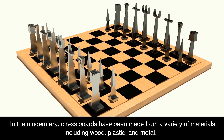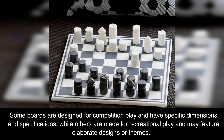In the modern era, chessboards have been made from a variety of materials, including wood, plastic, and metal. Some boards are designed for competition play and have specific dimensions and specifications, while others are made for recreational play and may feature elaborate designs or themes.